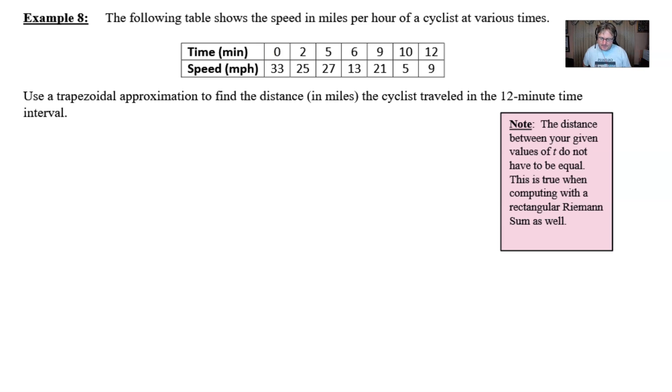So what we've got here is the following table that shows the speed in miles per hour of a cyclist at various times. As you can see, at 0 minutes we caught the cyclist traveling at 33 miles per hour, pretty fast, probably going downhill. And then at time 2 we have a different speed, at time 5, at time 6.